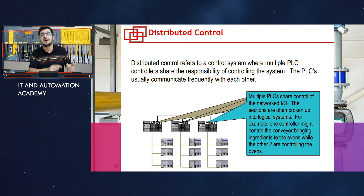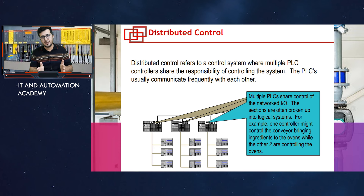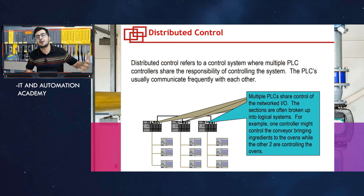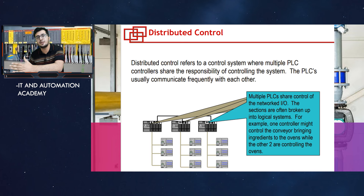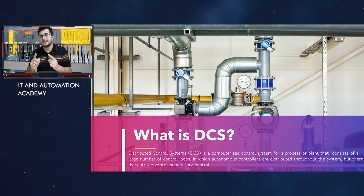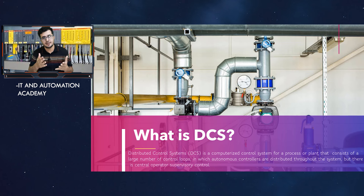The basic concept of distributed control is that you take different areas and each controller takes care of a specific area. The advantage is that if your unit B controller fails, units A and C have no effect — they would still be running. This is the beauty of distributed control, which we have seen in both PLC and DCS.